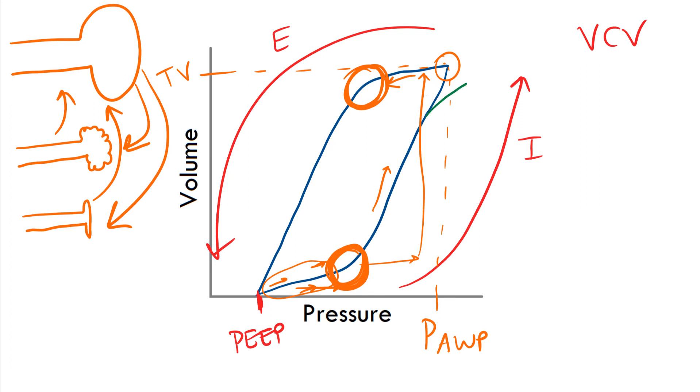Sometimes, you might see this towards the end of inspiration, also known as the penguin sign or bird's beak, in which you are applying a lot of pressure but achieving very little volumes. Essentially, you are over distending, putting the patient at increased risk of barotrauma and even volutrauma.